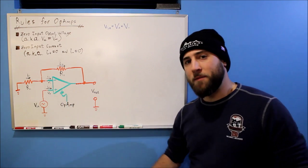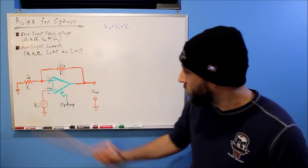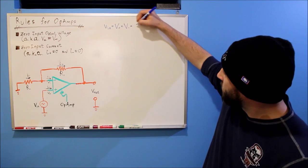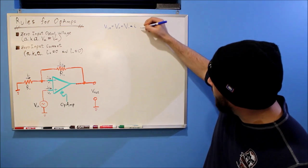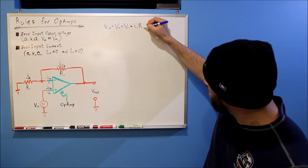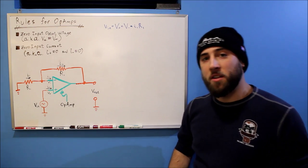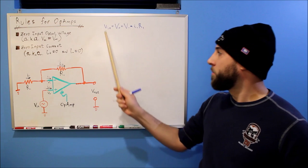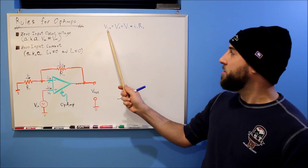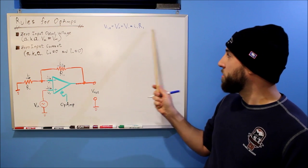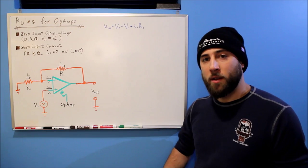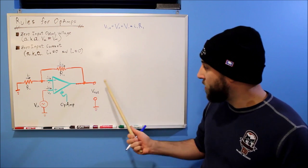Well, we could also describe V minus in terms of R1 as I1 R1. So there's an equation for us. We have an equation that describes V in. It's equal to I1 R1. Now let's look at V out. What's V out equal to?